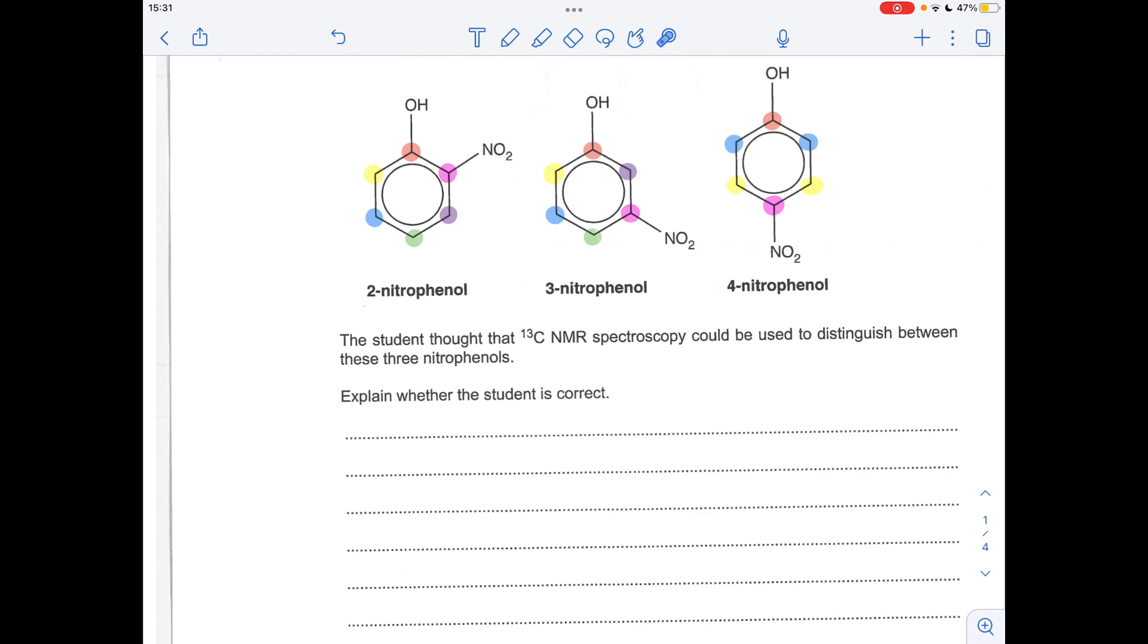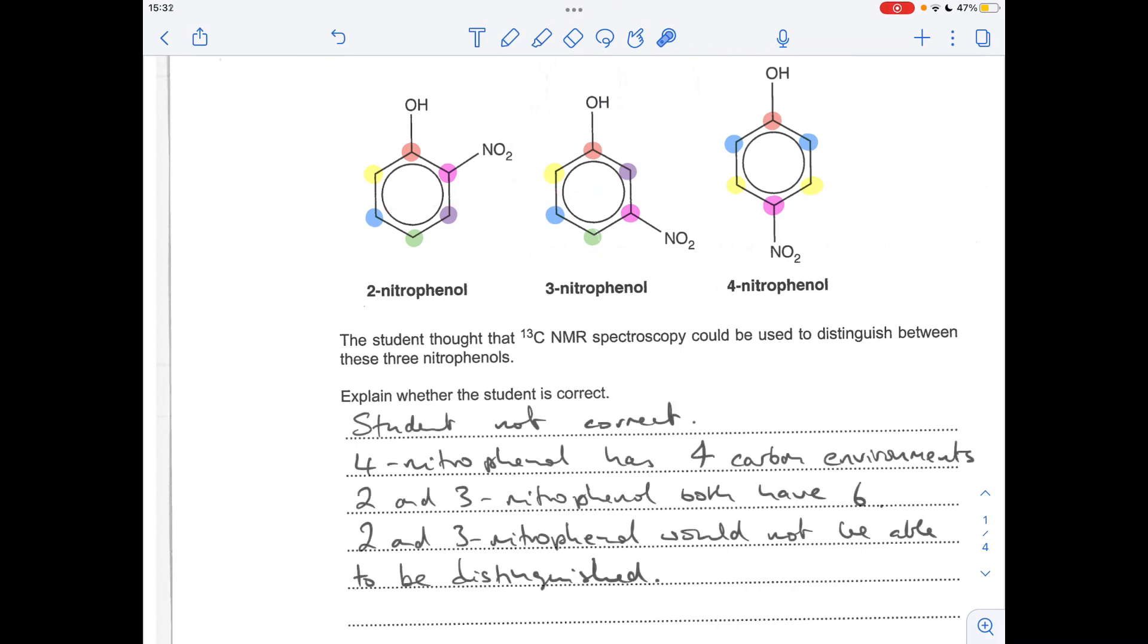So is the student correct? Well no, because this could be distinguished but these two can't. The student's not correct. 4-nitrophenol has four carbon environments, 2 and 3-nitrophenol both have six, therefore 2 and 3-nitrophenol would not be able to be distinguished.